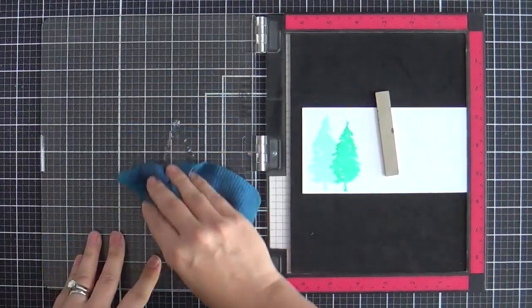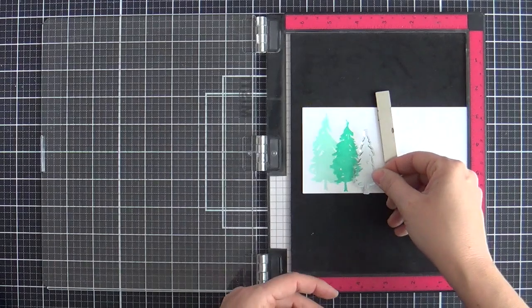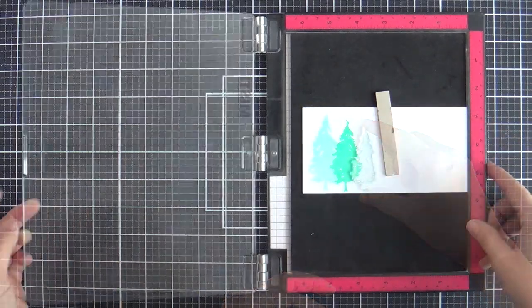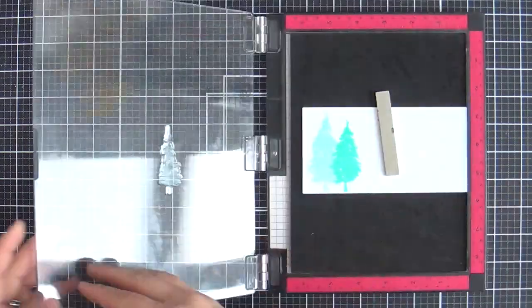There's a lot of different tree sizes in the Forest Scenery stamp set. So you can kind of stagger the trees and gradiate the colors.